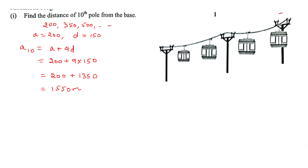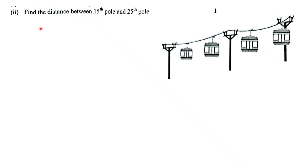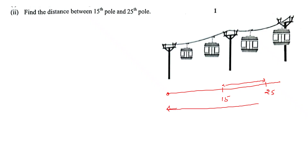Now moving to the second question: find the distance between the 15th pole and the 25th pole. Here is the 15th pole and here is the 25th pole, and you have to find the distance between them. First find the distance of the 25th pole from the base, then find the distance of the 15th pole from the base, and subtract both.